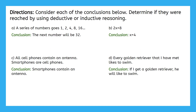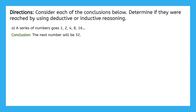Let's put this new information into action with our first example problem. Our directions say: consider each of the conclusions below and determine if they were reached by using deductive or inductive reasoning. Part A says that a series of numbers goes 1, 2, 4, 8, and 16. The conclusion is that the next number will be 32. We were given a pattern of numbers here and made an educated guess about what would come next based on the past terms.